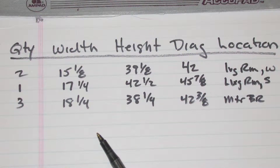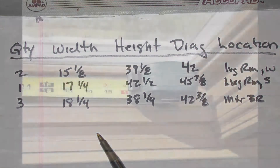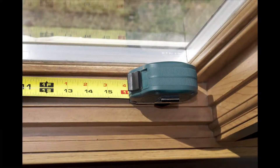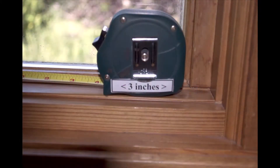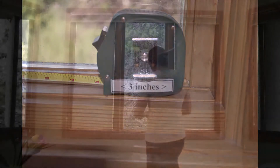Make yourself a table as shown, or print the order form available on the Eco Window Blankets website. A tape measure is the best way to measure the windows. However, to avoid a common mistake, add the length of the tape measure housing to your measurement as shown.